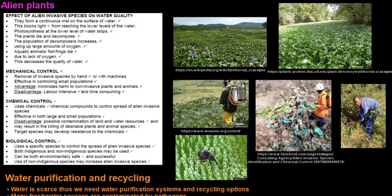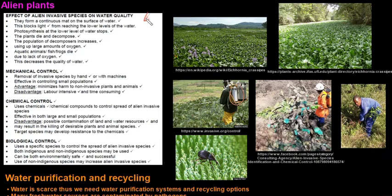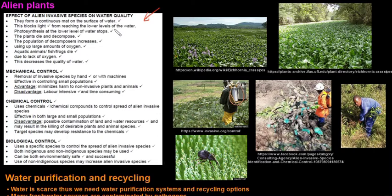We'll continue with part three of human impact, starting with alien plants. Alien plants have a similar effect to eutrophication on water quality. This is from a previous exam paper taken as an example. The effect of alien invasive species on water quality is that they form a continuous mat on the surface of the water.